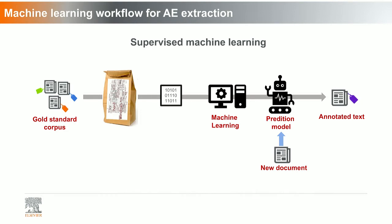I'm showing you a general supervised machine learning approach — supervised meaning we are training machines with labeled data. You start with training data, which in the text mining world we call a gold standard corpus because it is manually curated and labeled. In order to feed the machine to understand this data, we need to translate it into machine-understandable language. We convert text data into digital information — this conversion of text to digital we call natural language processing. Once the machine is trained, we have a prediction model ready, and when you have new content, you feed it into the prediction model and identify the information.